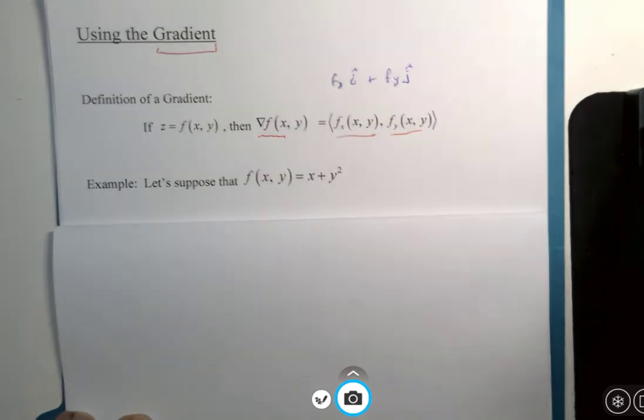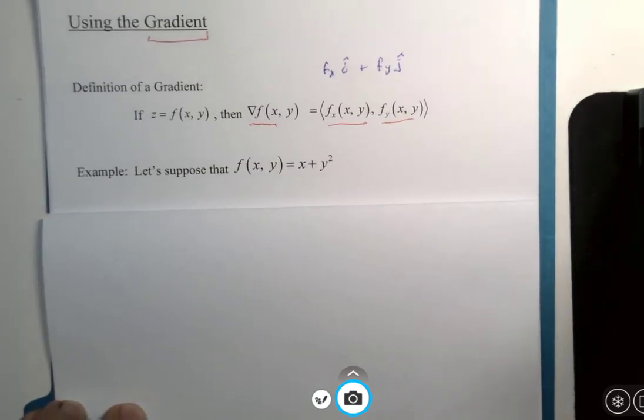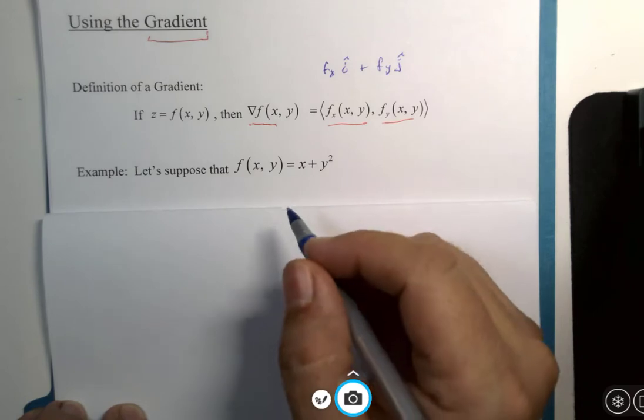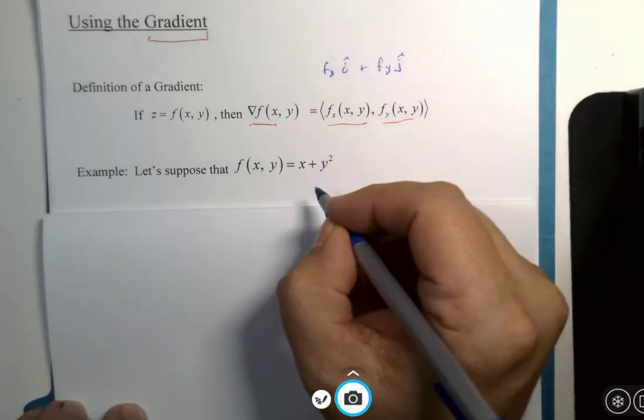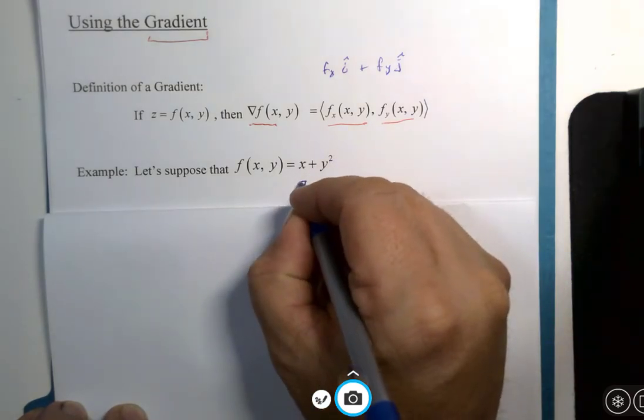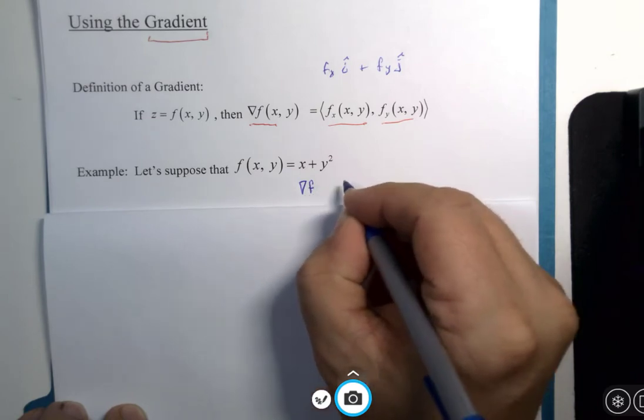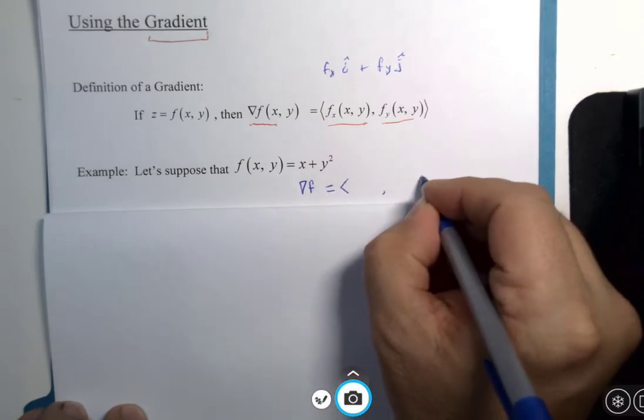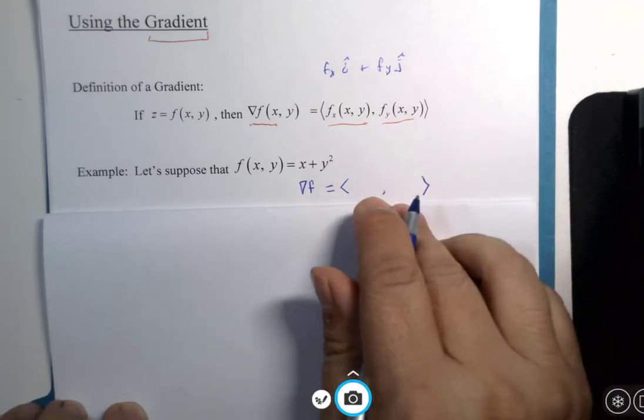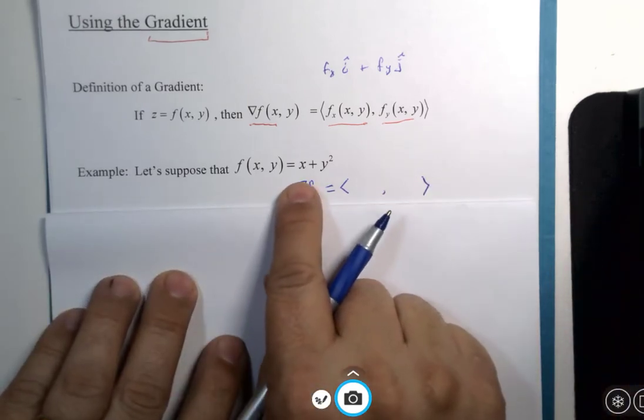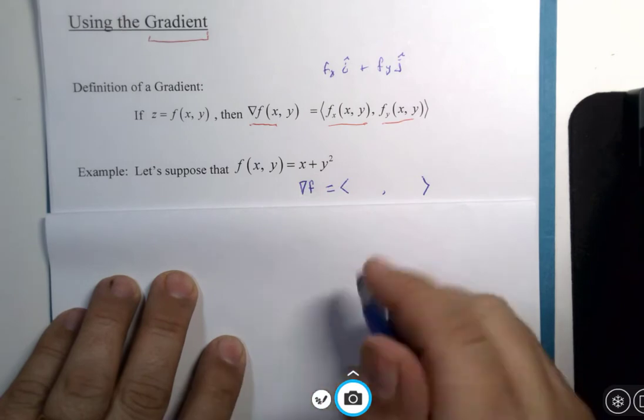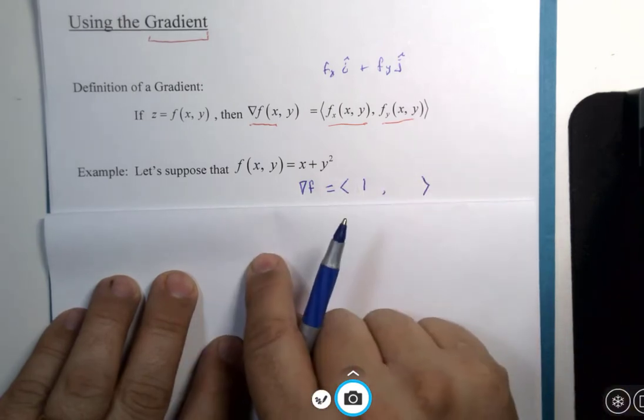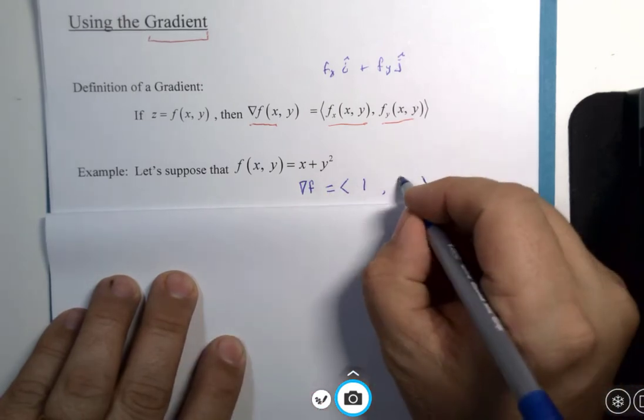Because the page has a title on it, I'm using my student superpowers and just sort of assume I probably need this calculation. So the gradient of this function is a vector I get with those two partial derivatives. The derivative with respect to x is going to be just one, and the derivative with respect to y is going to be 2y.